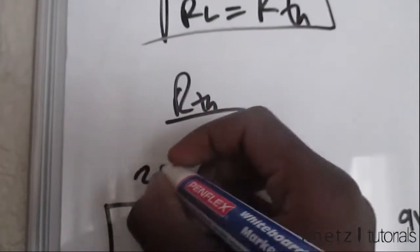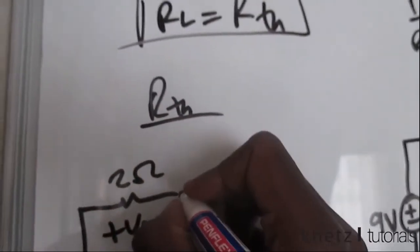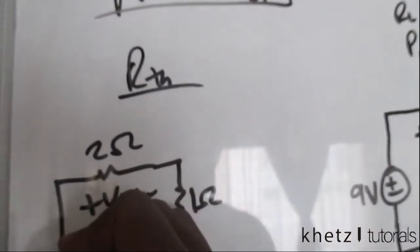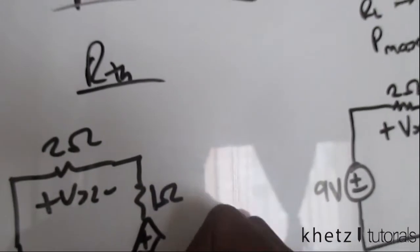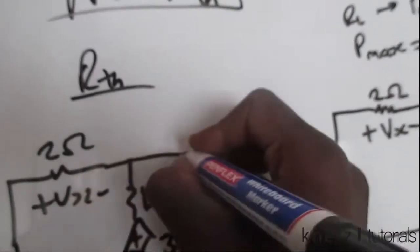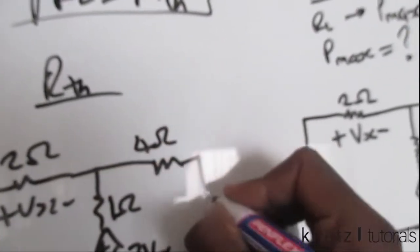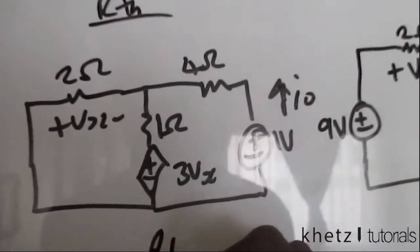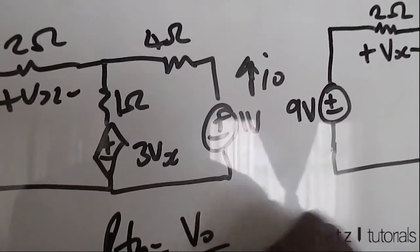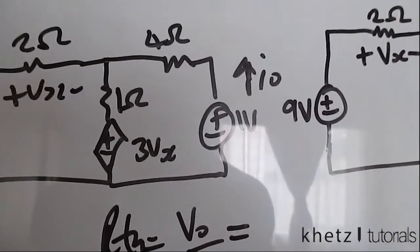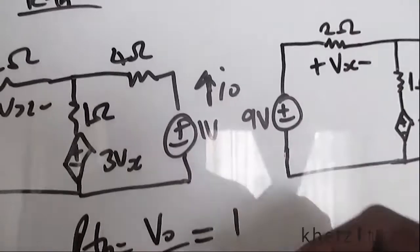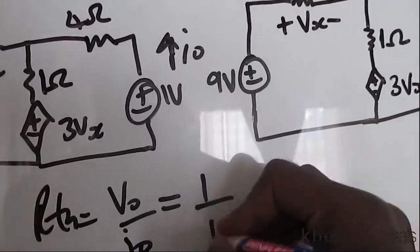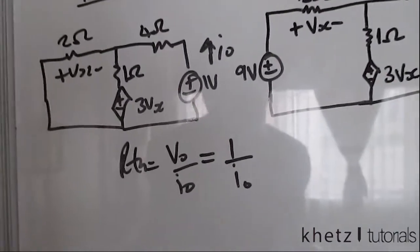Removing this voltage source will lead to a short circuit. Since we have a dependent source, we're going to introduce a test source at the terminals — a test source of 1 volt going up. Then R_th equals V_o divided by I_o, and since V_o is 1 volt, R_th equals 1 divided by I_o. So we need to find I_o.